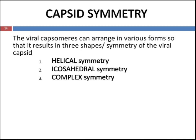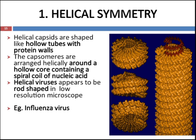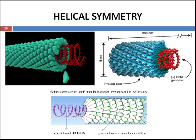When capsomeres are arranged in a three-dimensional structure to form a geometrical shape, the virus may have different types of symmetry: helical symmetry, icosahedral symmetry, and complex symmetry. In helical symmetry, helical capsids are shaped like hollow tubes with protein walls, and the capsomeres are arranged helically around the hollow core containing a spiral coil of nucleic acid. The helical virus appears rod-like in low resolution microscopy. An example of a virus showing helical symmetry is the influenza virus.